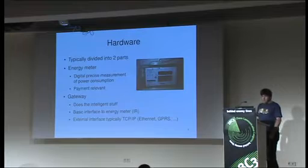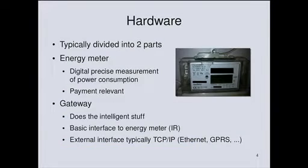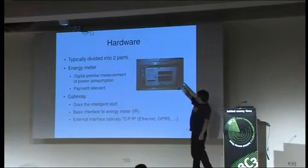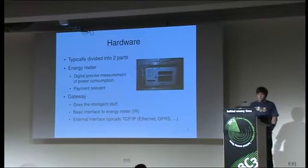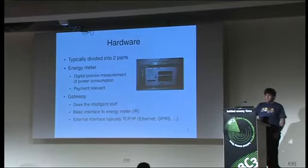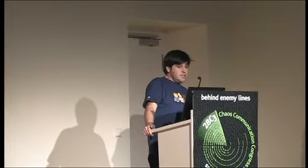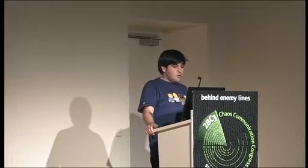The hardware for a smart meter is typically divided into two parts. You have an energy meter — a digital measurement instrument in your cellar, working like the old analog one, possibly showing amounts for different times of day. Attached to this is a gateway, which does the intelligent work: it records data and has a communication interface to the smart meter, normally via infrared signals. It also has an external interface — TCP/IP, Ethernet, or GPRS, depending on your local setup — and can transmit data to others.